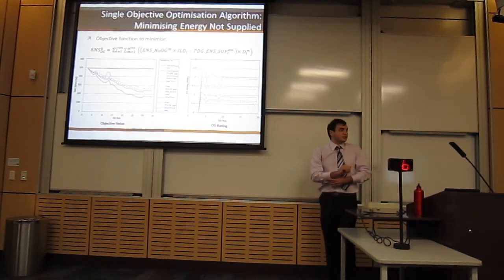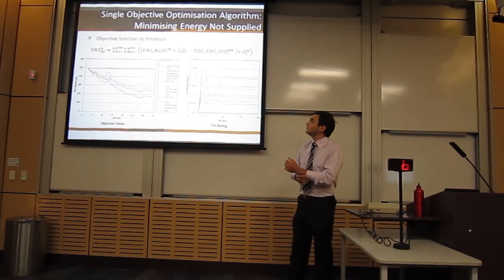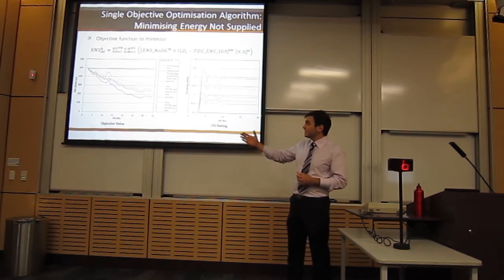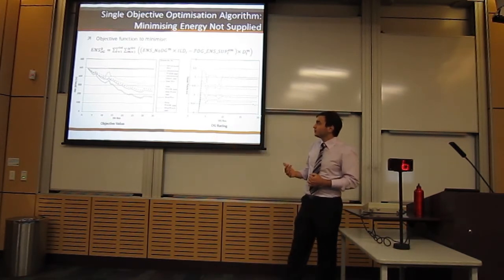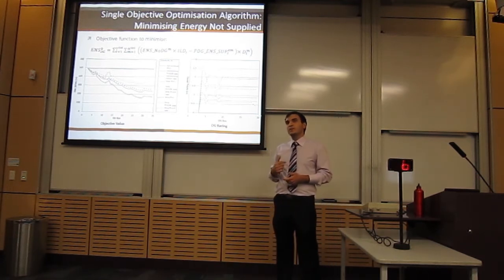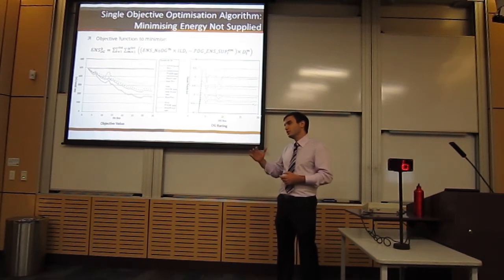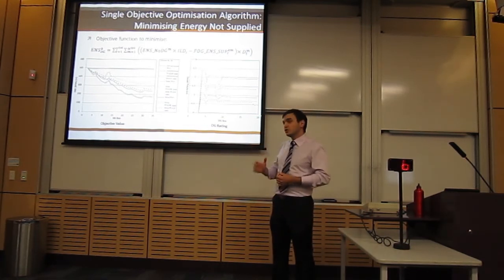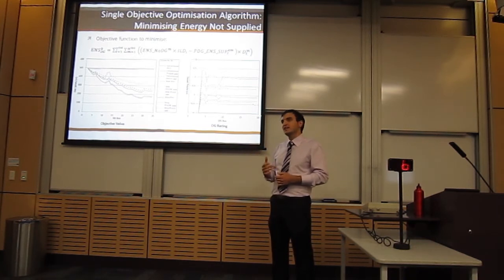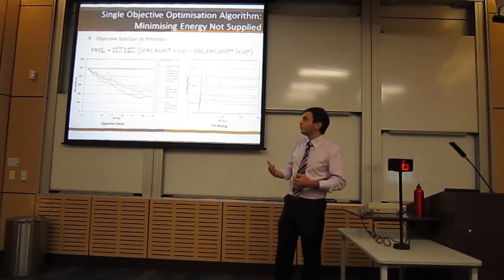The second optimization algorithm developed is that to minimize energy not supplied (ENS). As seen on the left graph, as the DG is implemented further from the grid connection, there are significant reductions in total ENS. This is because the DG can supply power to the isolated section of the network in a greater number of fault scenarios when implemented further from the grid connection. Wind and conventional generation have the greatest effect on reducing ENS, as they are relatively consistently available throughout the day, compared to solar, which has no generation available at night.